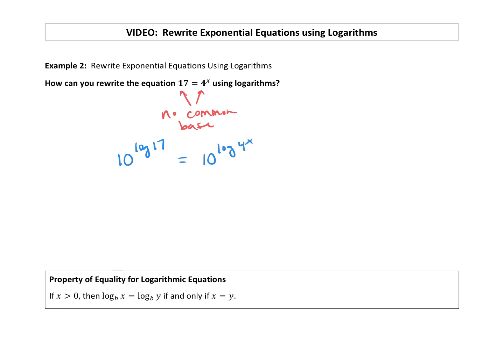And now we have a common base. So again, manipulating how it looks when you have that common base on both sides. Now our exponents will be equal to each other. So we can say log of 17 is equal to log of 4 to the x power.